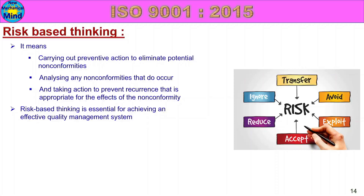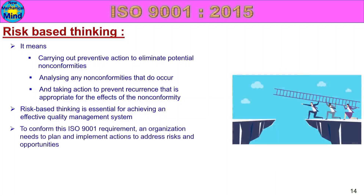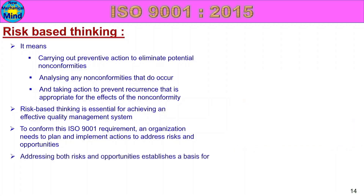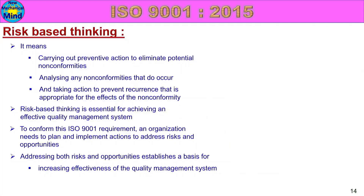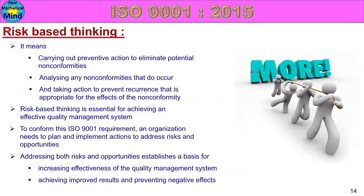Risk based thinking is essential for achieving an effective quality management system. ISO 9001 requires an organization to plan and implement actions to address risks and opportunities. Addressing both risks and opportunities establishes a basis for a risk and opportunities list, supporting the effectiveness of the quality management system and achieving improved results and preventing negative effects.